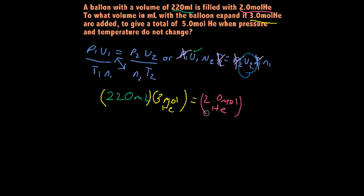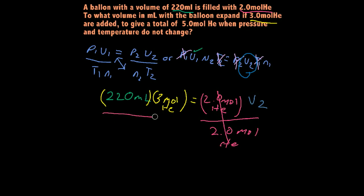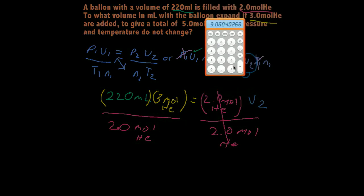Times our V2, which is what we ultimately want to solve for. We know that if we want to get V2 by itself, we just divide both sides by 2 moles of helium. That'll cancel out. So let's just grab our calculator and plug in these values to solve for V2. 220 milliliters times 3 moles divided by 2 moles equals 330.